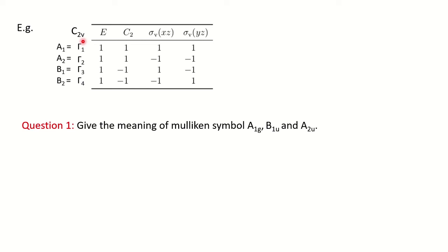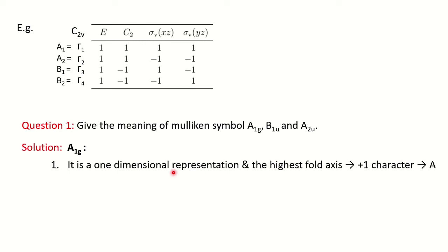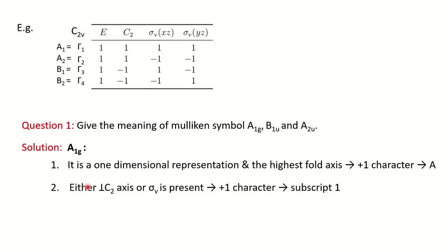Now we'll solve some problems from previous years' question papers. The question is: give the meanings of Mulliken symbols A1g, B1u, and A2u. They have given you the symbols and you have to tell what is the meaning of each. For A1g: A means one-dimensional representation; the highest fold axis has a positive one character. The subscript 1 means either the perpendicular C2 axis or sigma v has a positive one character.